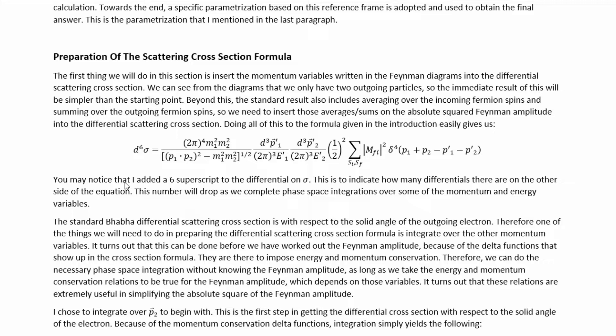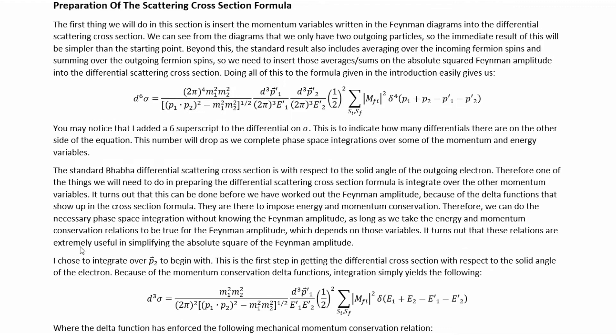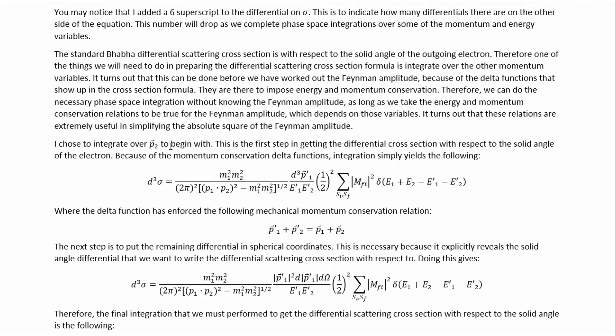You may notice that I added a superscript to the differential on sigma, to indicate how many differentials there are on the other side of the equation. This number will drop as we complete phase-space integrations over some of the momentum and energy variables. The standard BABA differential scattering cross-section is with respect to the solid angle of the outgoing electron. Therefore, one of the things we will need to do is integrate over the other momentum variables. It turns out that this can be done before we have worked out the Feynman amplitude because of the Dirac delta functions in the cross-section formula, which are there to impose energy and momentum conservation.